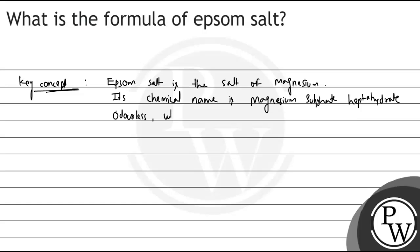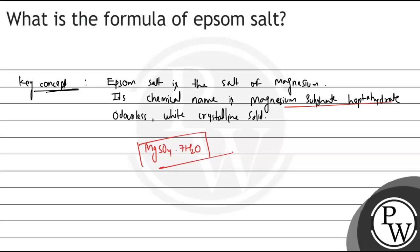Theek hai? Aur color ki baat kar rahe hain, toh white crystalline solid rehta hai. Ab iska formula kya hoga? Toh humne chemical name dekha — magnesium sulfate heptahydrate. Hypta means 7, so heptahydrate means 7H2O. The chemical formula for Epsom salt is MgSO4.7H2O.